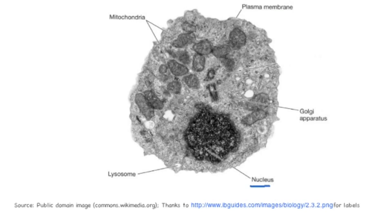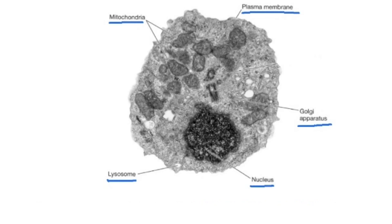This final image serves to show the relative sizes of the organelles within a eukaryotic cell. You have the large nucleus, the Golgi apparatus with its curved structure and vesicles at the end, the plasma membrane going all the way around the outside, the mitochondria with the lines formed by the internal membrane on the inside, and the lysosome as the smaller circular structure.